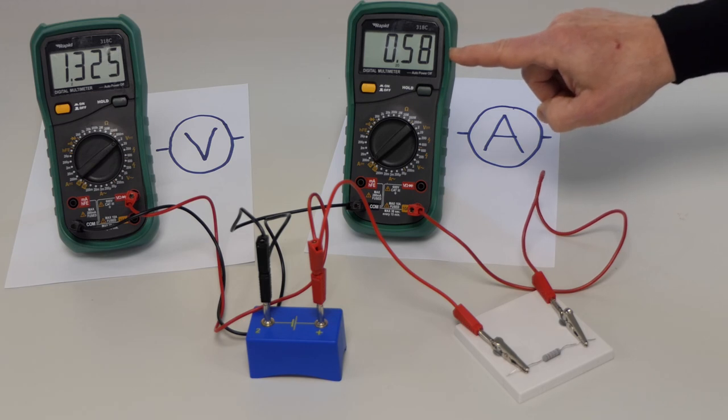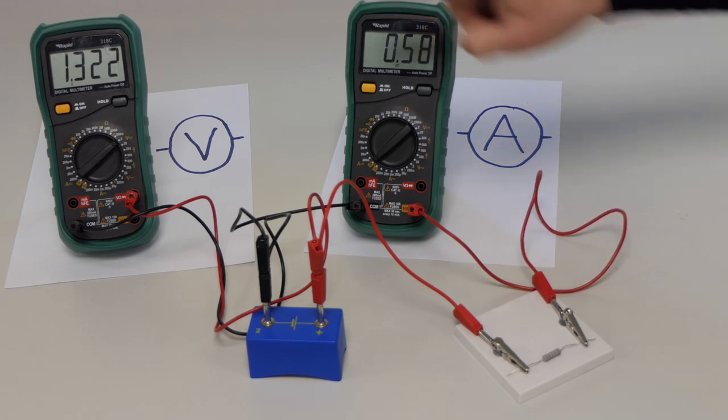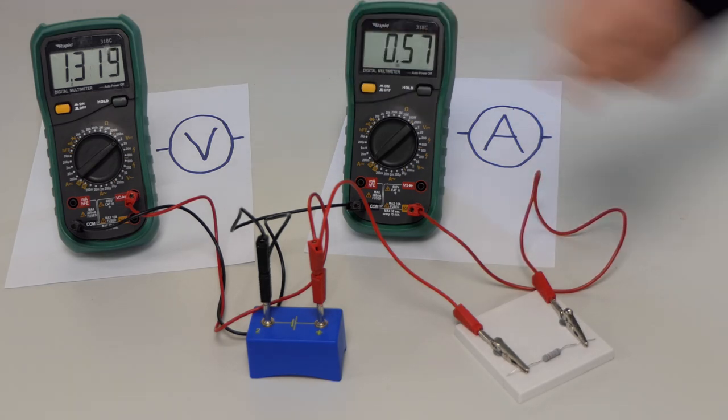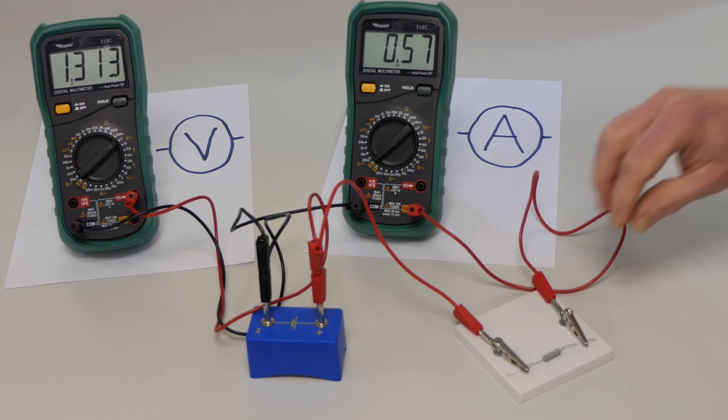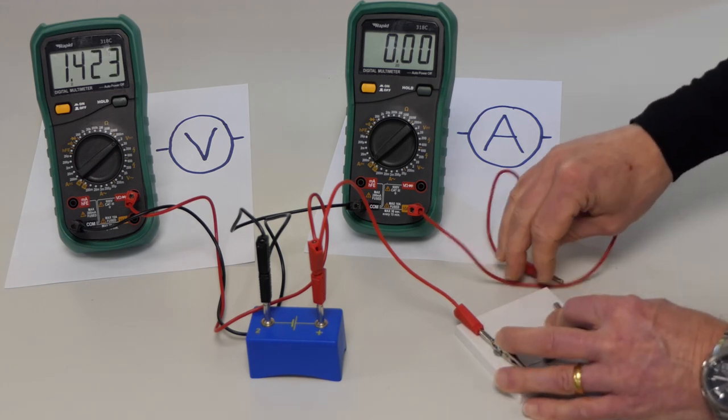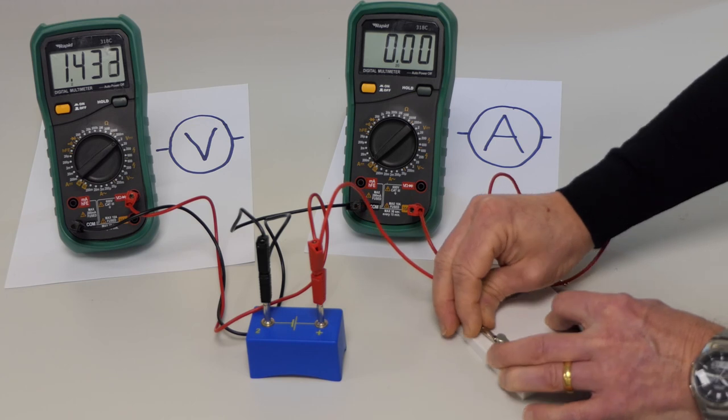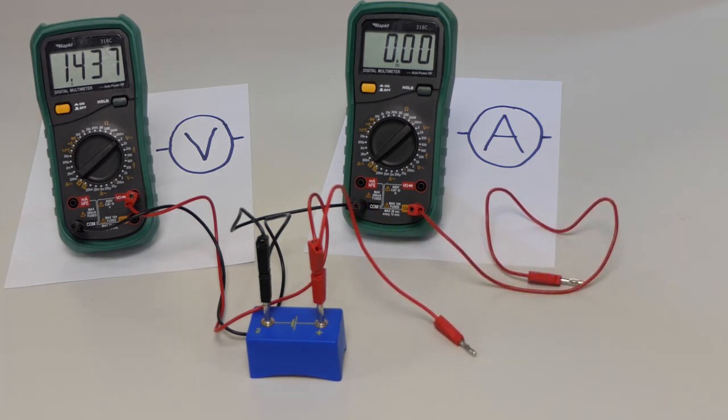You can see it's drawing a current from the battery but the voltage has gone down. The terminal voltage has reduced. I don't want to do that for very long because drawing a large current from a battery is not very good for the battery. It causes it to overheat.